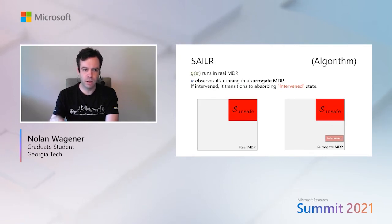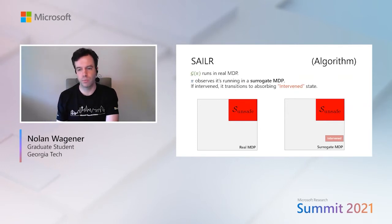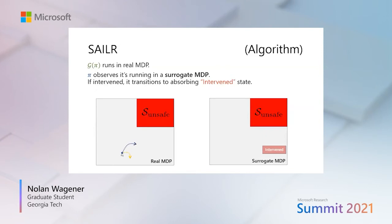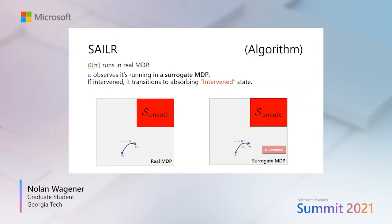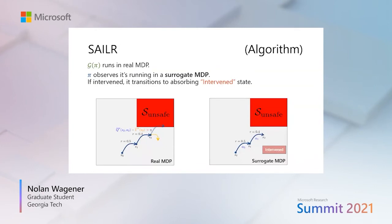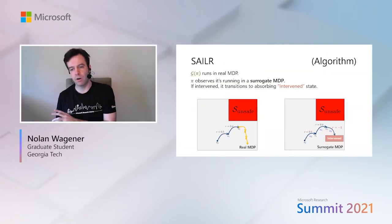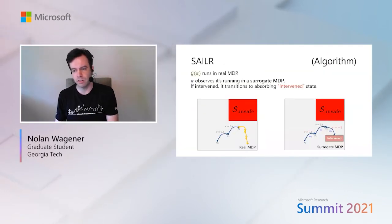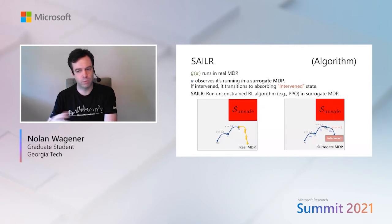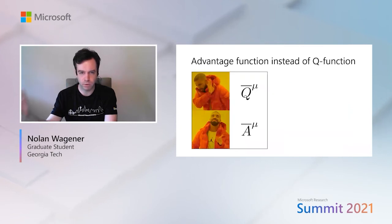The only difference in dynamics between the two MDPs is that if pi is intervened, it transitions to an absorbing intervened state. At any given time, g observes the proposed action from pi and compares its cost to that of the baseline policy. If the advantage meets the threshold, the action from pi is accepted. If the advantage is too large, the baseline policy overrides pi and completes the episode in the real MDP. From the perspective of the RL policy pi, it transitioned to an absorbing state and received a reward of negative one. SAILOR simply optimizes the RL policy pi in the surrogate MDP using something like PPO.